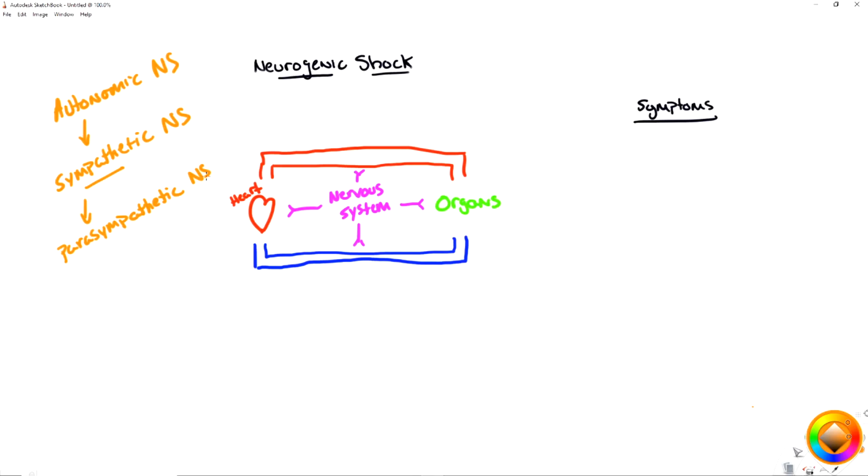Now remember, we are injuring or severing the spinal cord in a significant enough manner at C1 through C7. But the sympathetic nervous system is T1 through L2. So C1 and C7 are right above T1. So if we have an injury where the spinal cord is damaged enough that signals don't reach T1, the sympathetic nervous system ceases to exist.